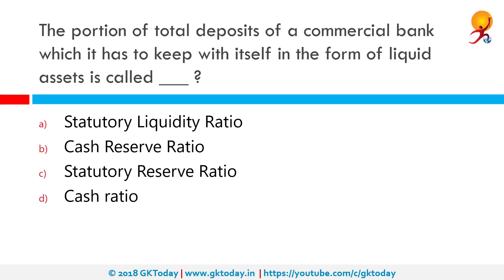The portion of total deposits of a commercial bank which it has to keep with itself in the form of liquid assets is called the statutory liquidity ratio. Whereas the cash reserve ratio refers to a certain percentage of total deposits that commercial banks are required to maintain in the form of cash reserve with the central bank.